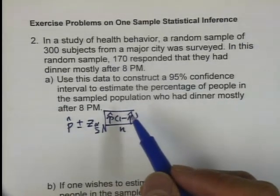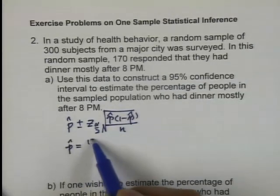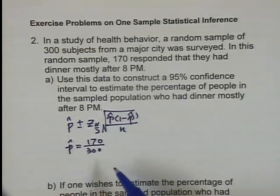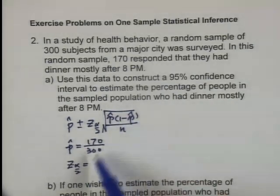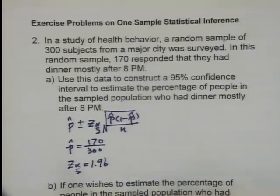So what is the p-hat then? p-hat here is 170 out of the 300. What will be the z-score for this problem? Again, it's 95% and you don't have to look up a table. After a few problems, you probably have that memorized. That's 1.96.